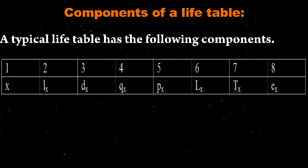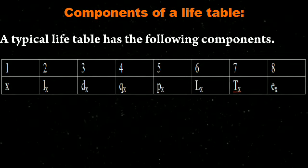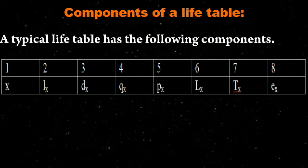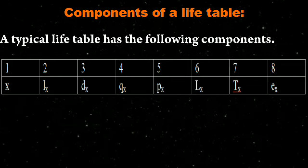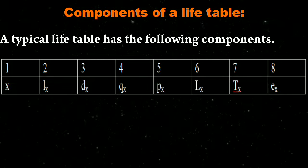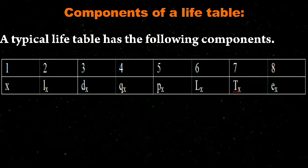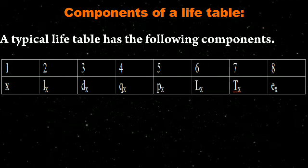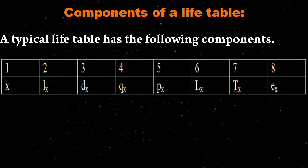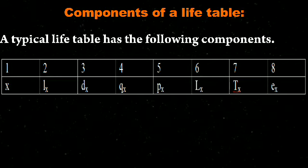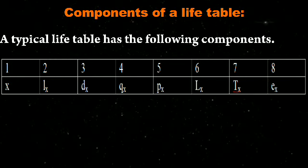On the screen you can see a life table example. Each and every life table will have 8 components. The first component is x, followed by lx, Dx, Qx, Px, Lx, Tx, and Ex. These are the 8 notations used to represent the 8 different components of a life table.